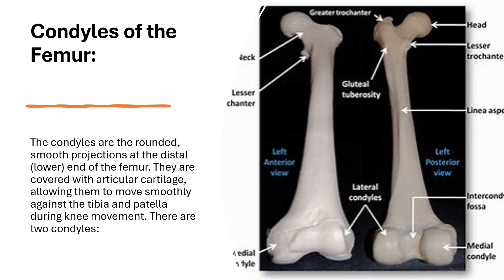The lateral condyle is found on the outer side of the femur and articulates with the lateral tibial plateau of the tibia. Although smaller than the medial condyle, the lateral condyle is vital for knee movement, especially in activities involving lateral or rotational motion, such as changing direction while running.